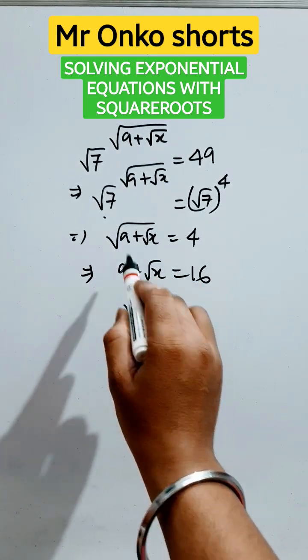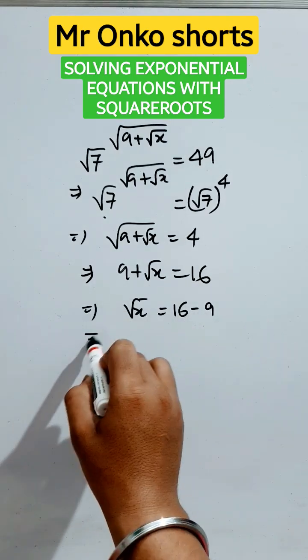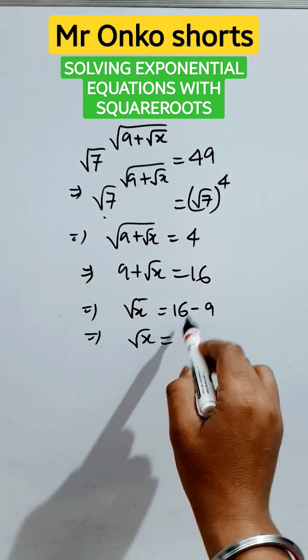Now, we will shift 9 to the right side. That will be root x equals to 16 minus 9. So, root x equals to 7.